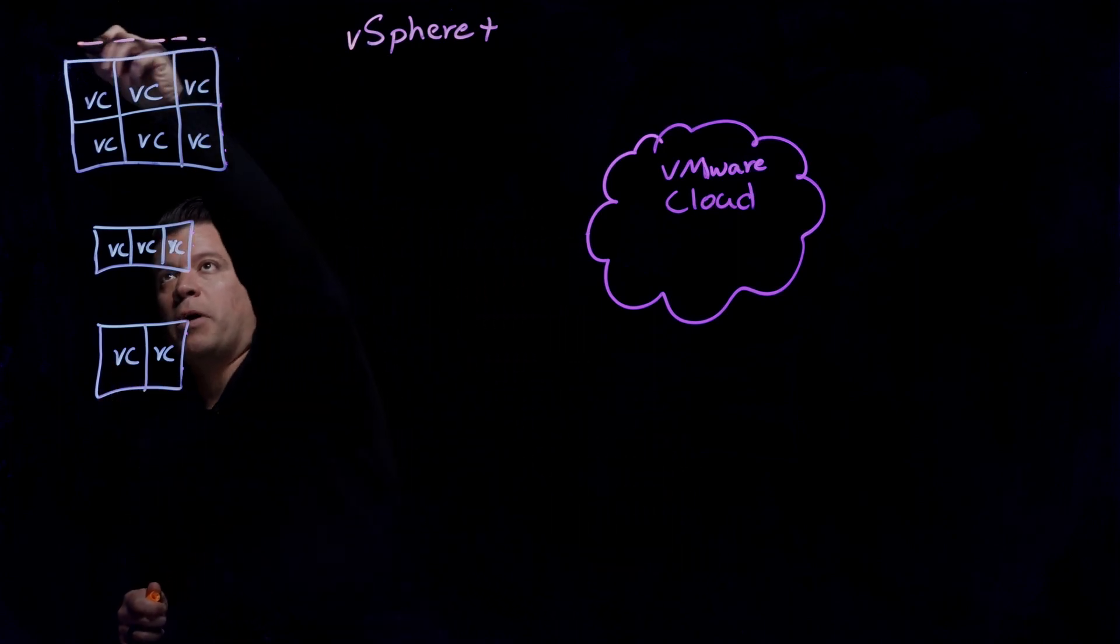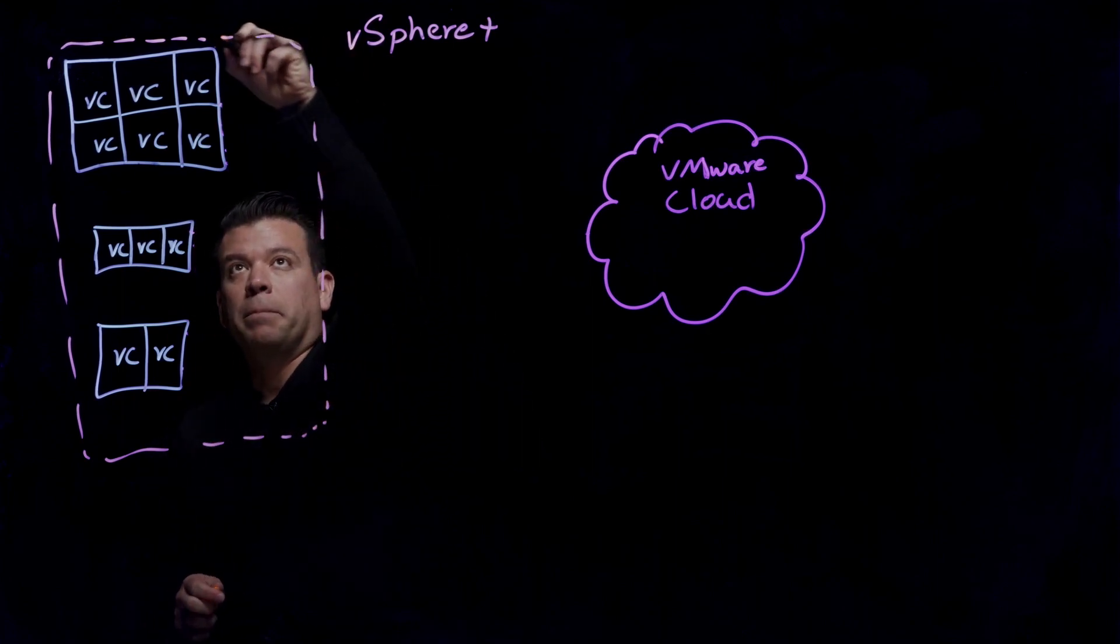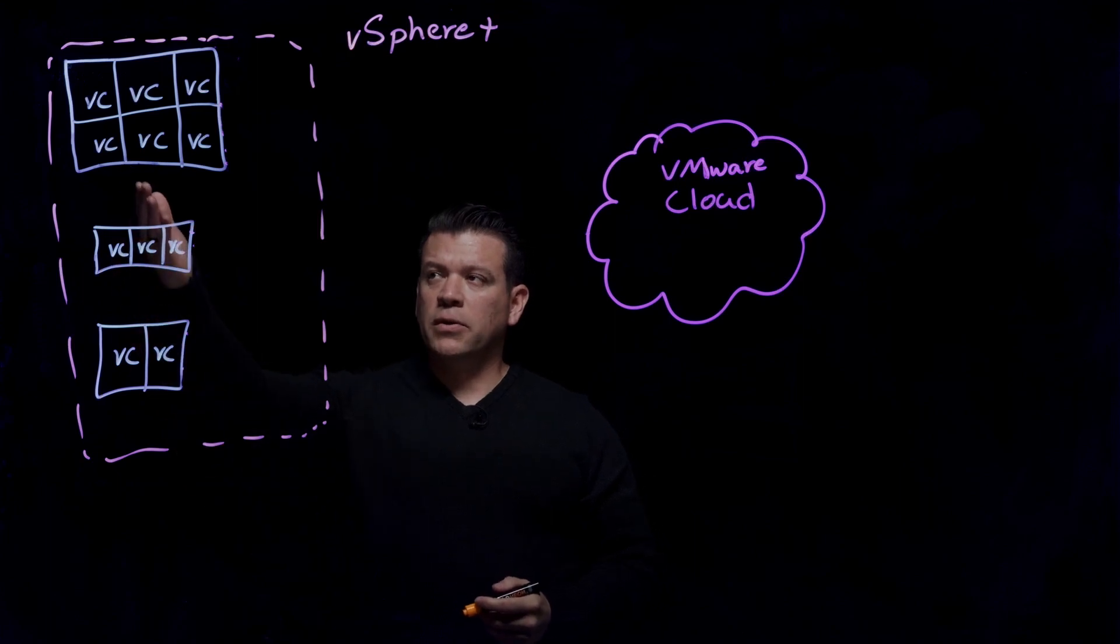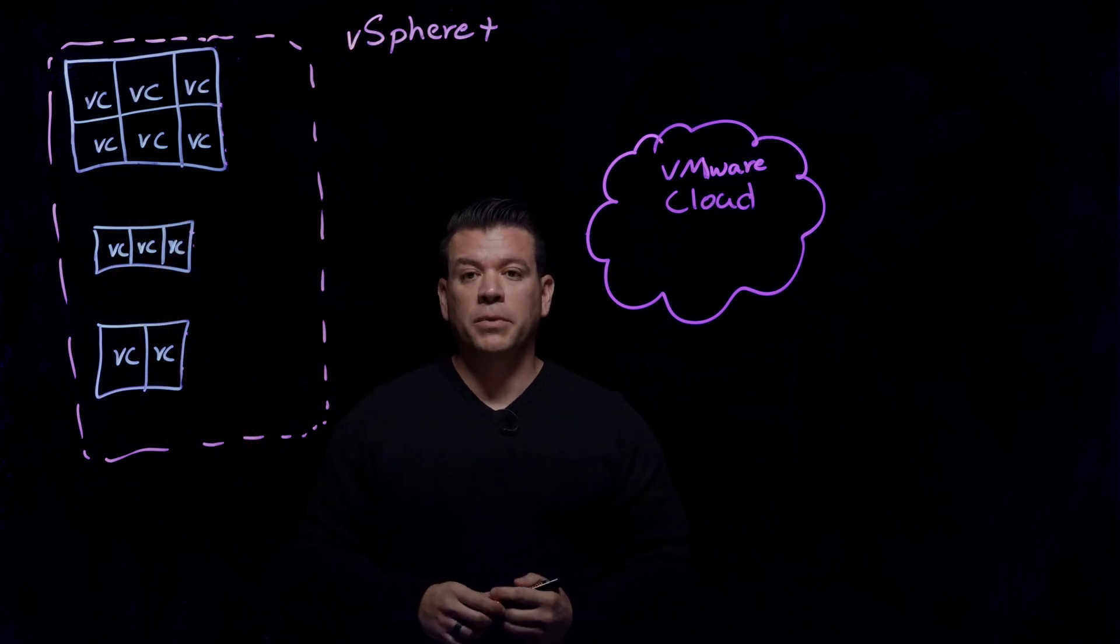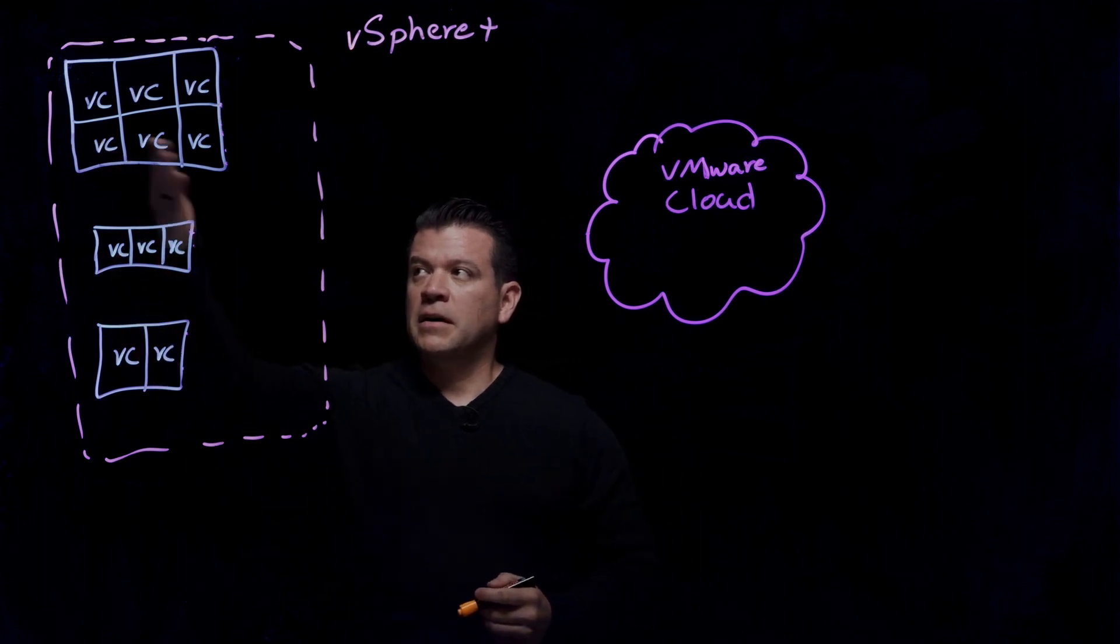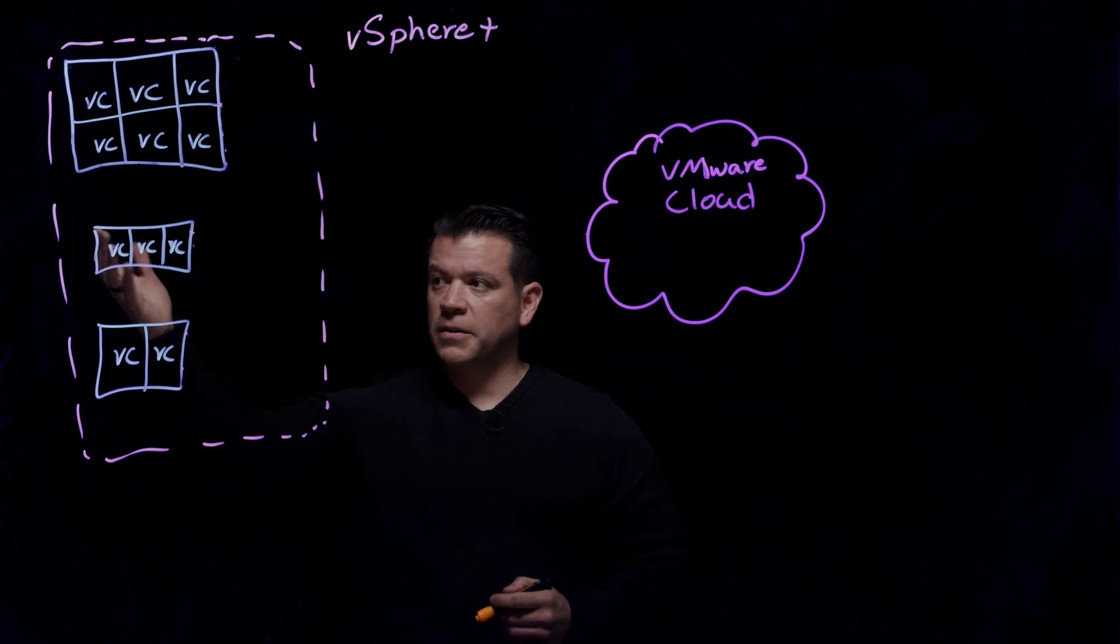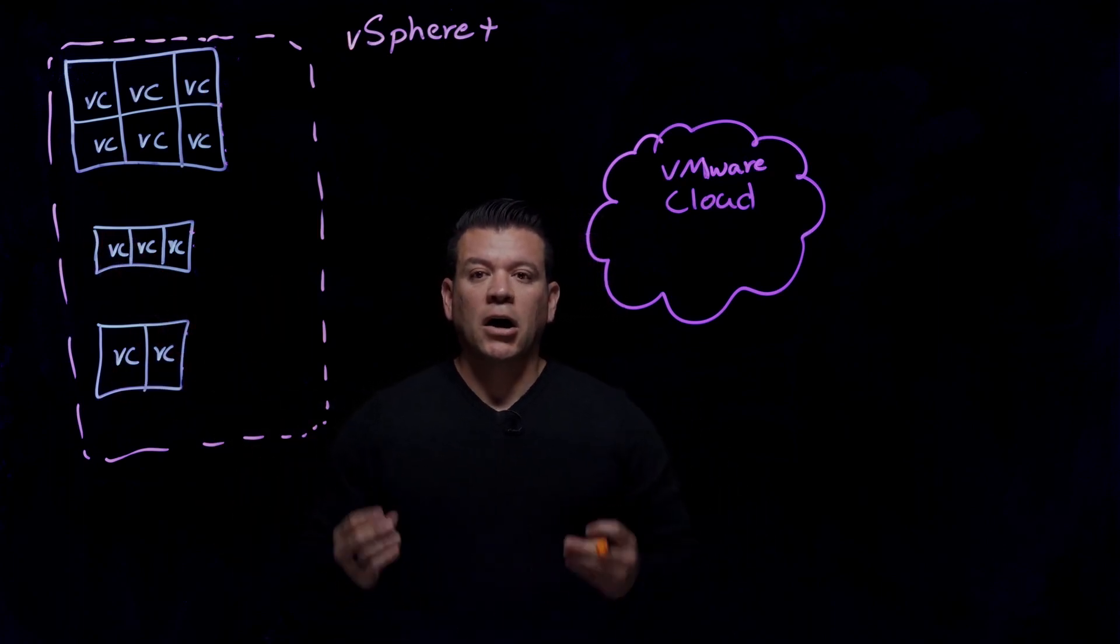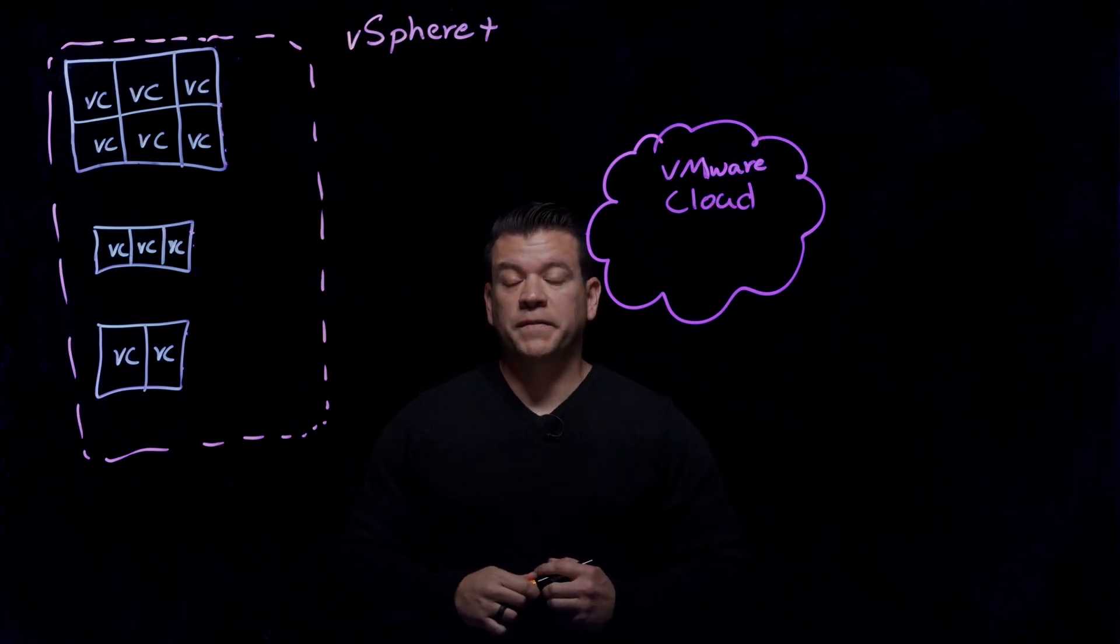This is our on-prem environment or environments for a company. Could be your company, a company that you know. So we can have a small number of vCenters or a very large number of vCenters. So think of if it's one of these squares, it's 100. So we'll have 600, 300, 200, et cetera. So we could manage hundreds or even thousands of vCenters from one location with vSphere Plus.